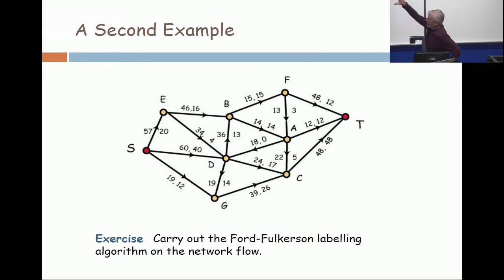So I've got S, E, B, D, G, and C. Ah, now because I can label C, I'd label A. So I can label everything except F and T. Everything except F and T.